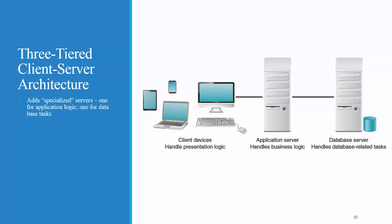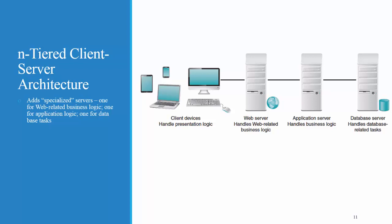In a three-tiered client-server architecture, you add another server — in this case, a specialized server that handles all of the application logic. Two- and three-tiered client-server architectures are examples of N-tier client-server architecture. You can have as many tiers as you need. In this example, there's an extra specialized server that works with web-related business logic. Titanium is an example of a system that uses N-tiered client-server architecture.